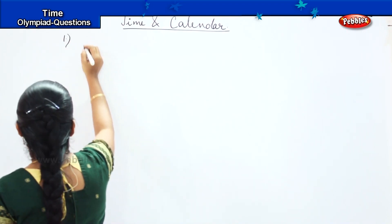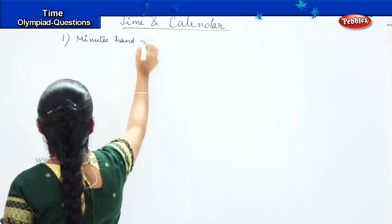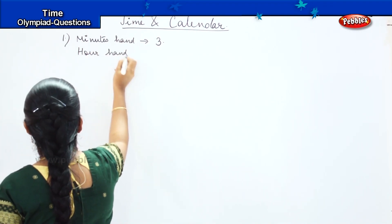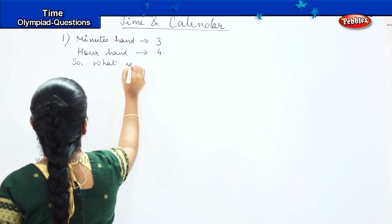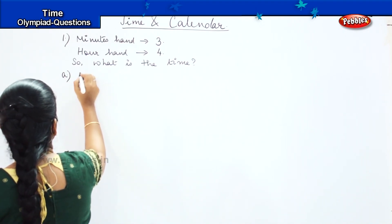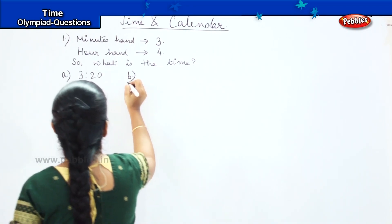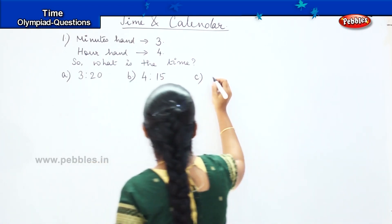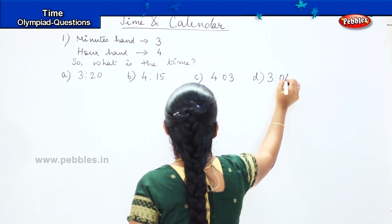Your first question says that my minutes hand is at 3 and my hour hand is at 4. So what is the time? And my options are 3:20, 4:15, 4:3, and 3:4.